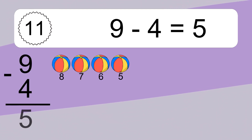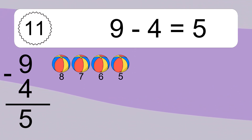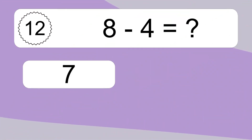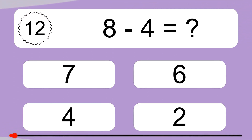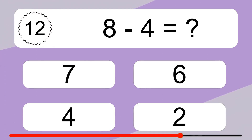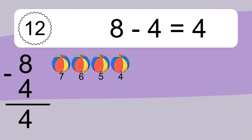9 minus 4 equals what? 9 minus 4 equals 5. Let's count it! 8, 7, 6, 5.